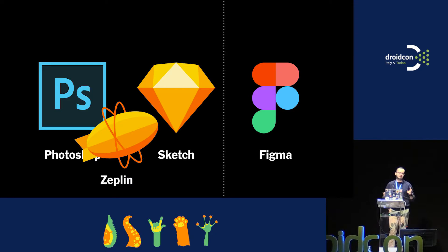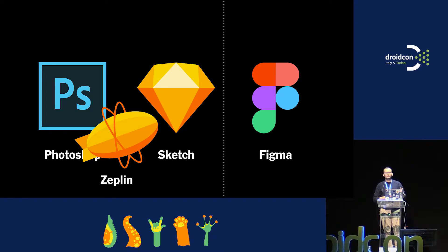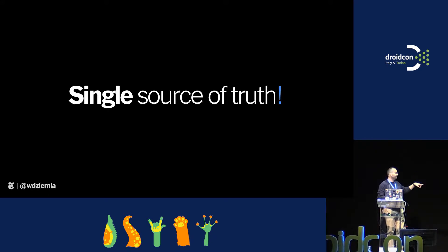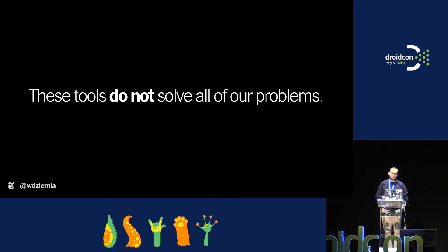The reason Figma is awesome is that the same file a designer uses to mock up the content is the same file the developer uses. It's essentially like a Google Docs of design — you can comment, there's revision history, and it has the standard toolset. Single source of truth is super important, because without it you'll eventually run into really terrible problems.